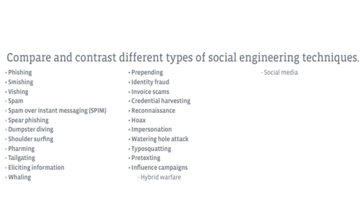Then we have prepending, meaning adding extra information — like adding an expression or phrase to an email subject line or headers to trick users. Prepending covers a wide variety of techniques and focuses on adding information or data to existing content, like adding mentions on Twitter posts to make them seem more personal.